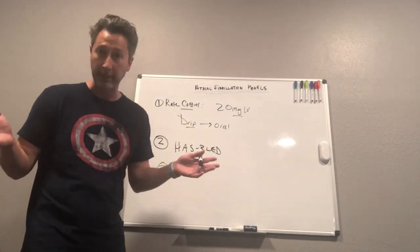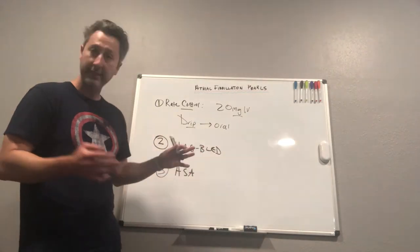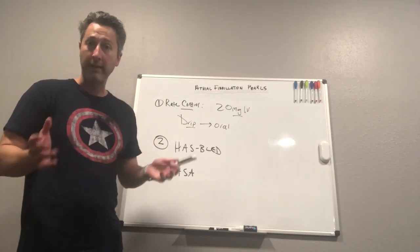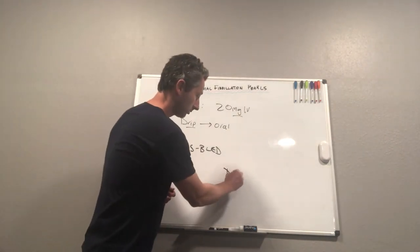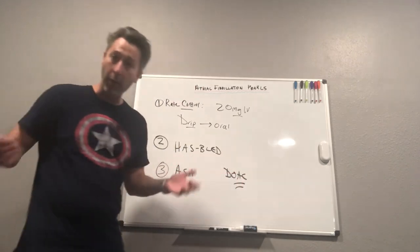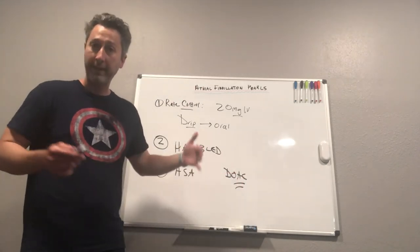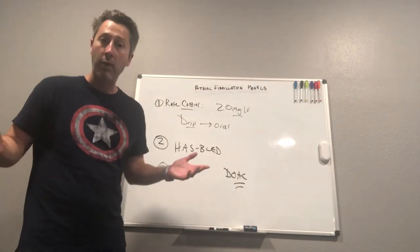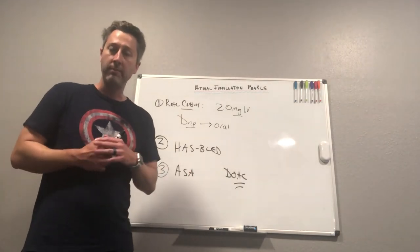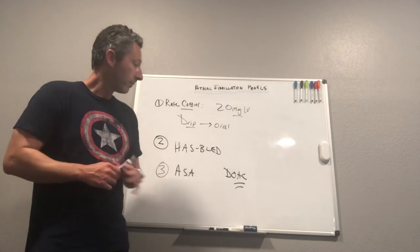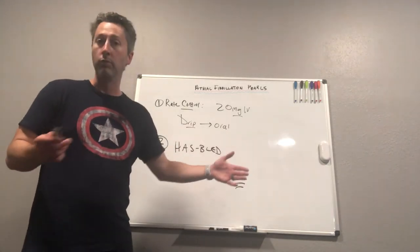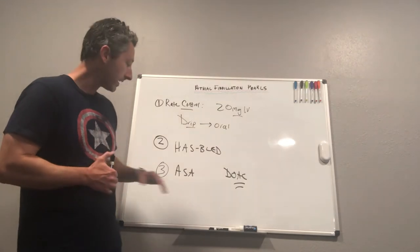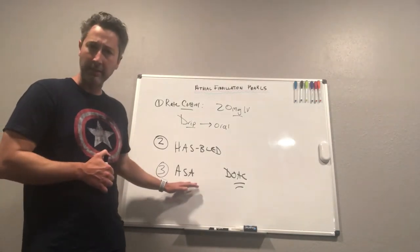So if they meet criteria for an anticoagulant, really what we should be doing is a DOAC. This is going to be your preferred medication. Now there are four DOACs out there and I want you to be familiar with all of them, but DOACs are going to be preferred to warfarin for patients who meet criteria for that. Aspirin monotherapy really is falling out of favor.